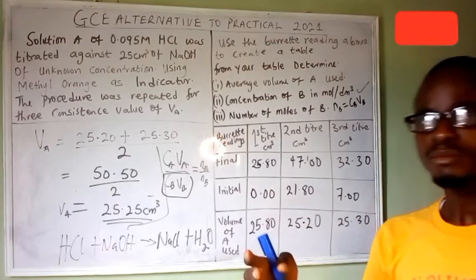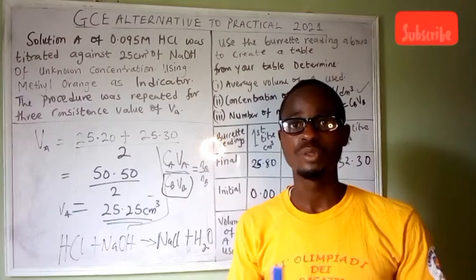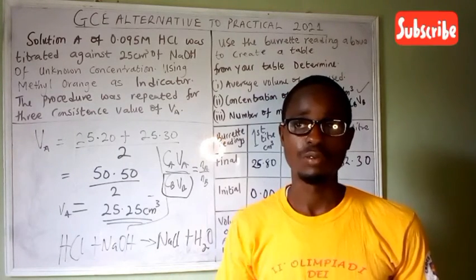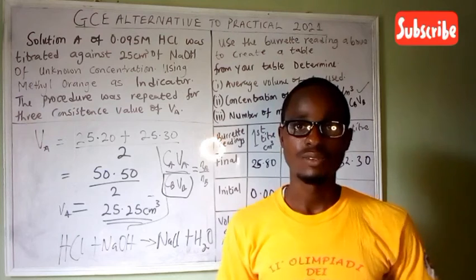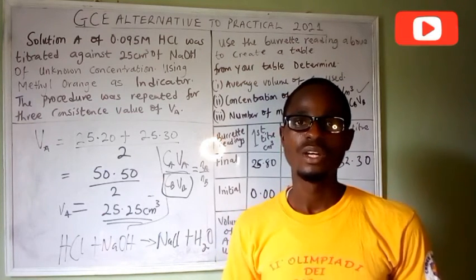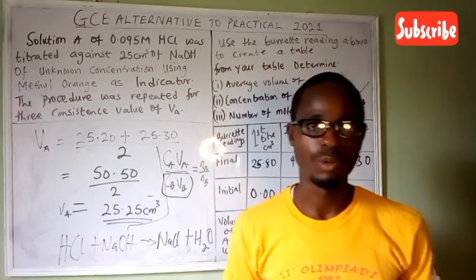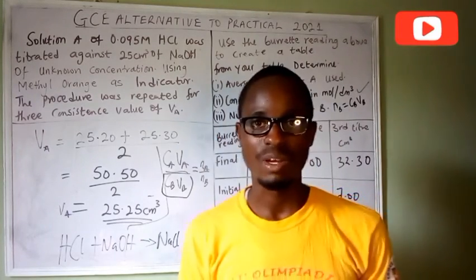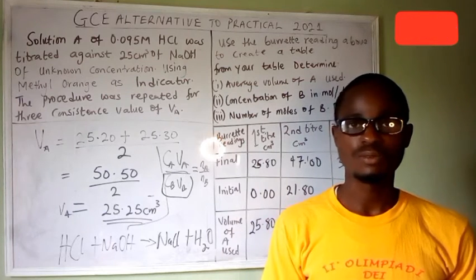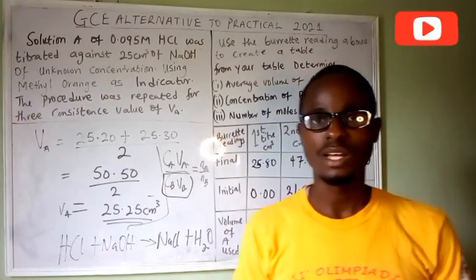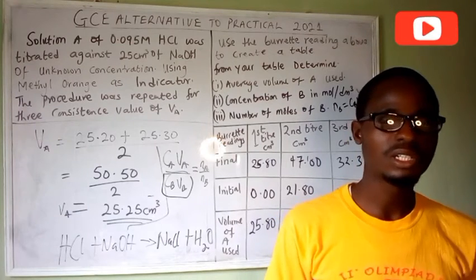Now let me briefly discuss qualitative analysis. In qualitative analysis we have two types: qualitative organic and qualitative inorganic. For inorganic, we break it down into three: the test for gas, the test for anion, and the test for cation. Gases are divided into three categories: acidic gases, basic gases, and neutral gases. Only three neutral gases exist: water vapor, hydrogen, and oxygen.